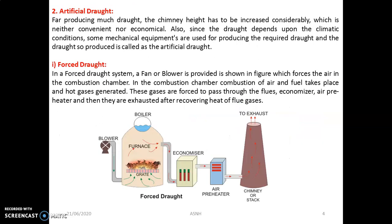The second important type, mostly used in large capacity power plants, is artificial draft, where the generation capacity of steam is very large. There are again two types: forced draft and induced draft. The basic difference between them is that in forced draft a blower is placed before the furnace, while in induced draft that blower is placed just before the chimney.